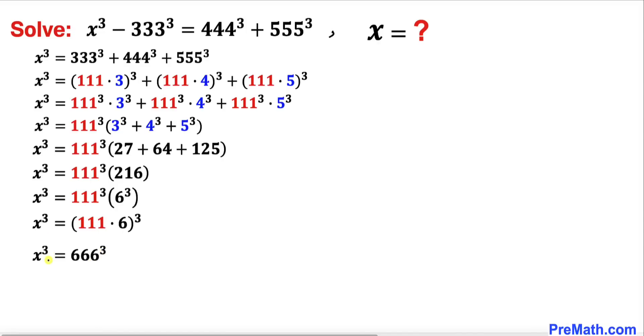Now let's undo this cube on both sides by taking the cube root on both sides. We can see that this cube and cube root undo each other on both sides, so that means we get x = 666. So that's our solution.